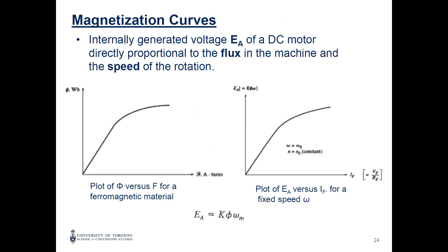We discussed the magnetization curve — we can use it as E versus I_F, or sometimes E versus MMF. MMF is N times current. For machines, it's the field current. E equals K × phi × omega, so it depends on speed — the magnetization curve is at a certain speed. K is a constant, phi is the flux, and omega is the speed in radians per second (or N in RPM).